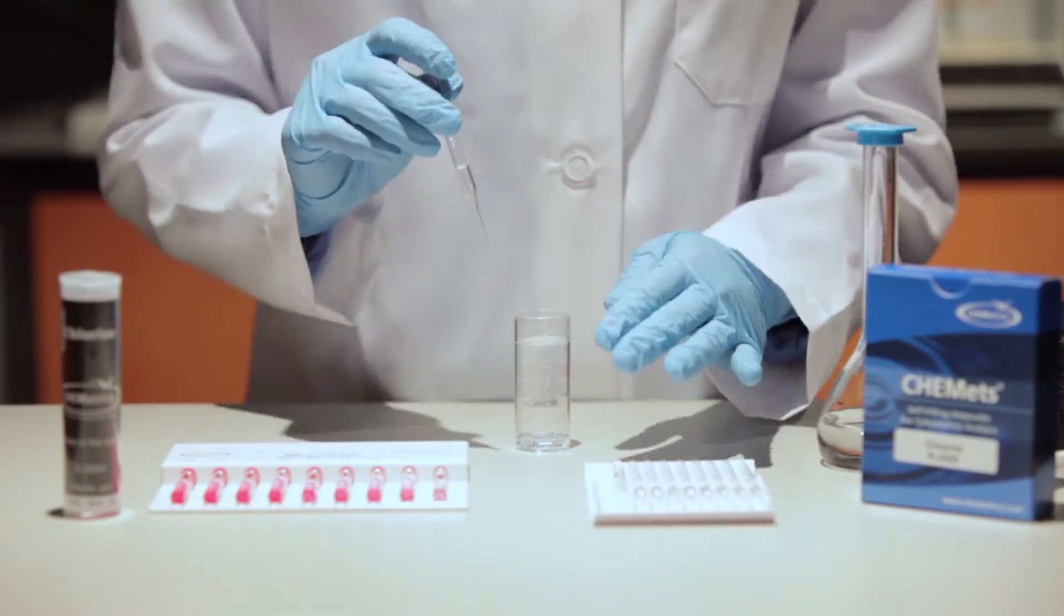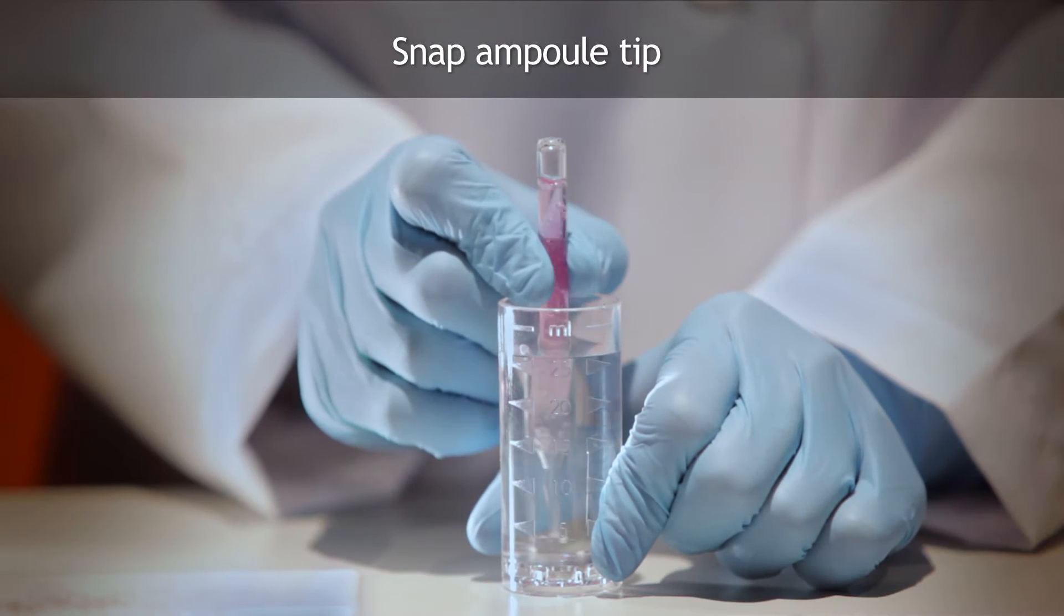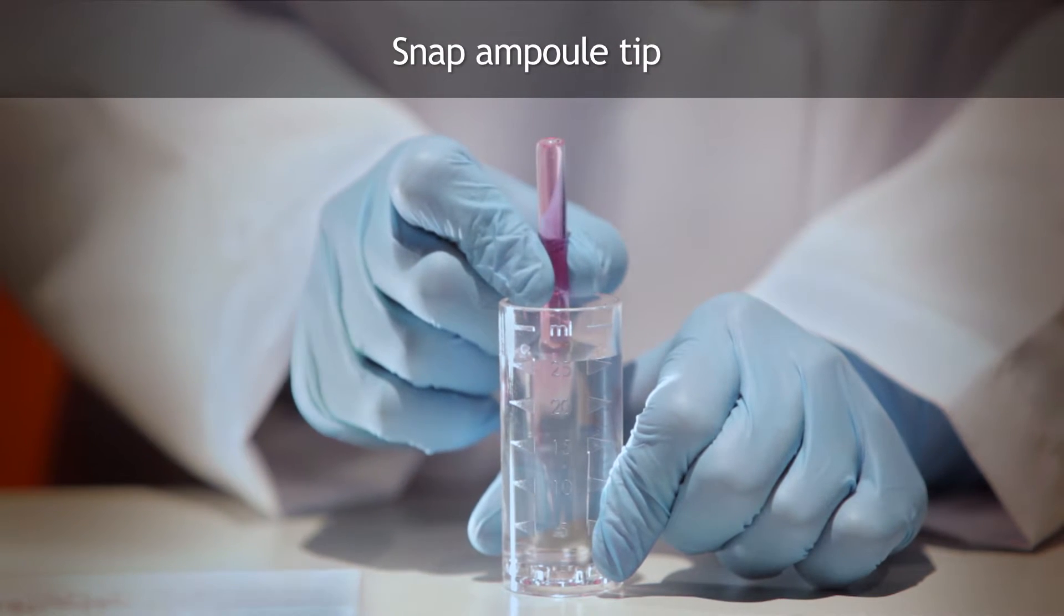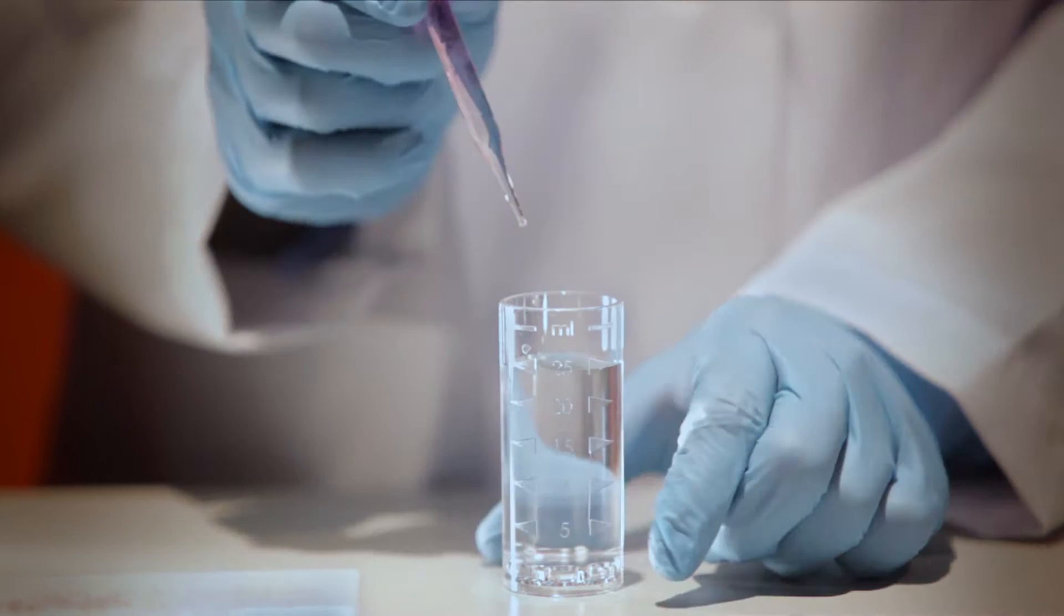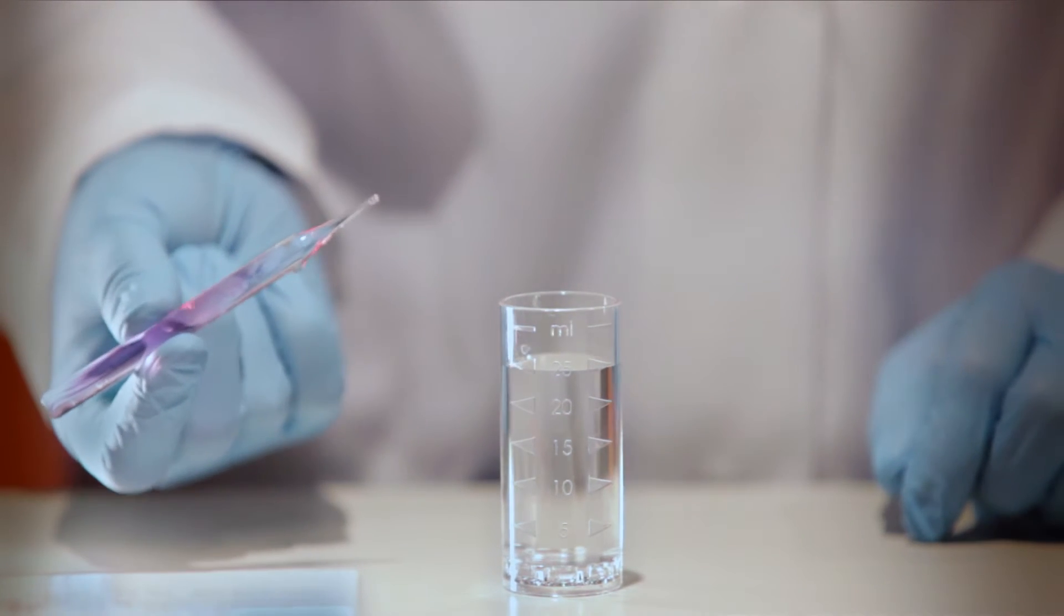Insert the tapered tip of the ampule into one of the depressions in the bottom of the sample cup. Snap the tip of the ampule by pressing the body of the ampule against the side of the cup. The vacuum in the ampule quickly pulls in the correct volume of sample.